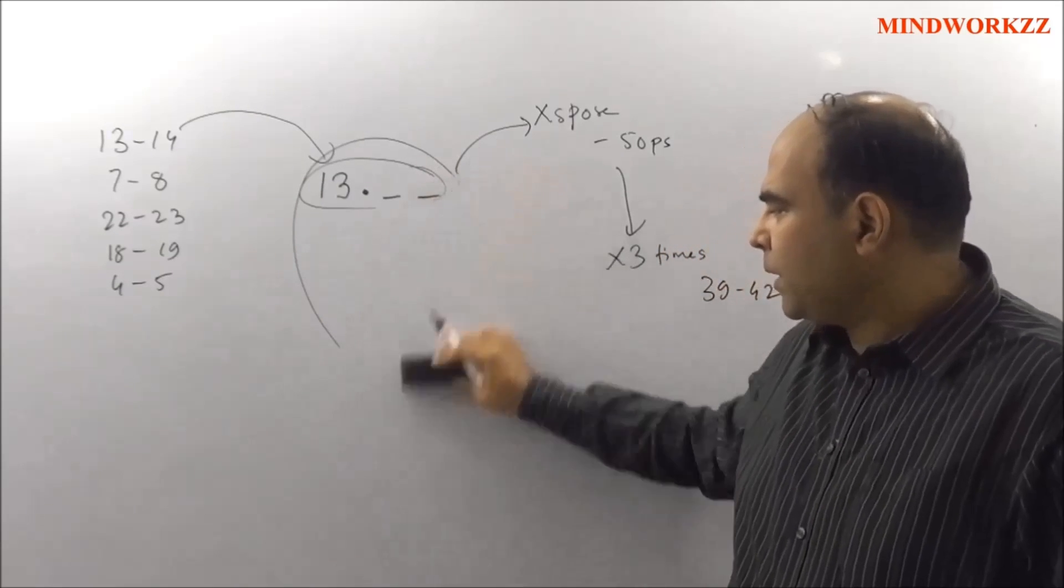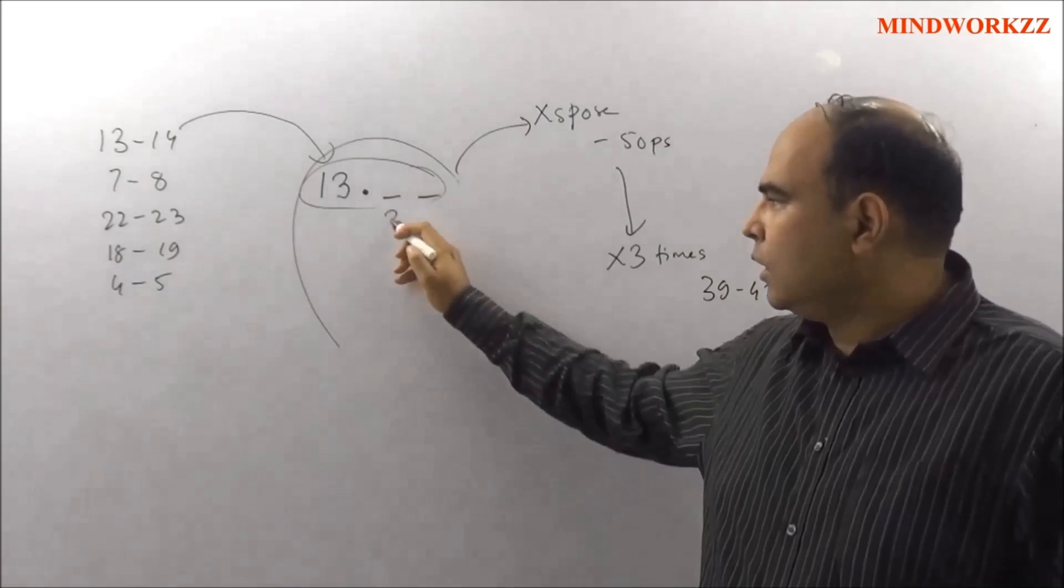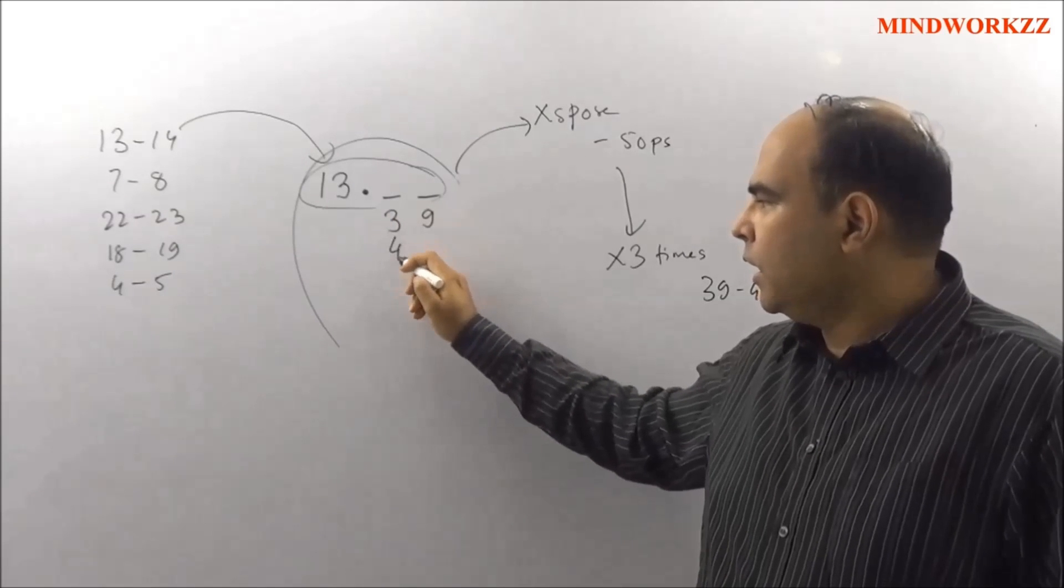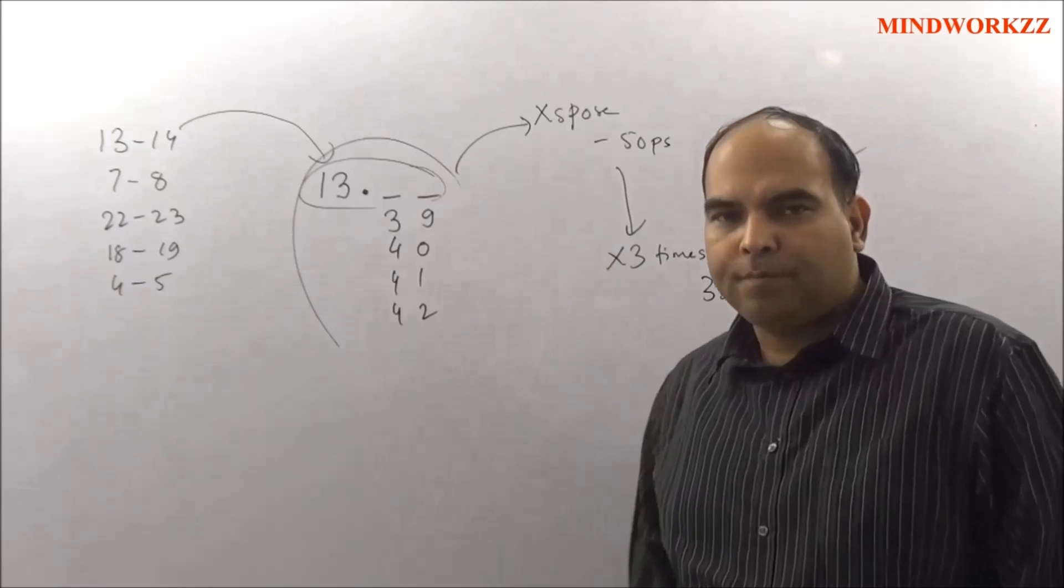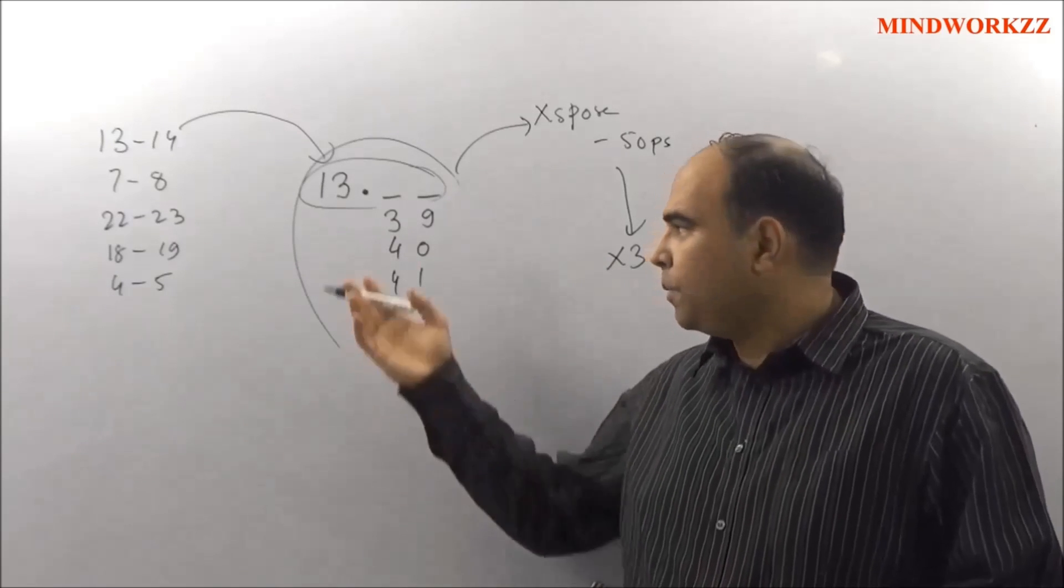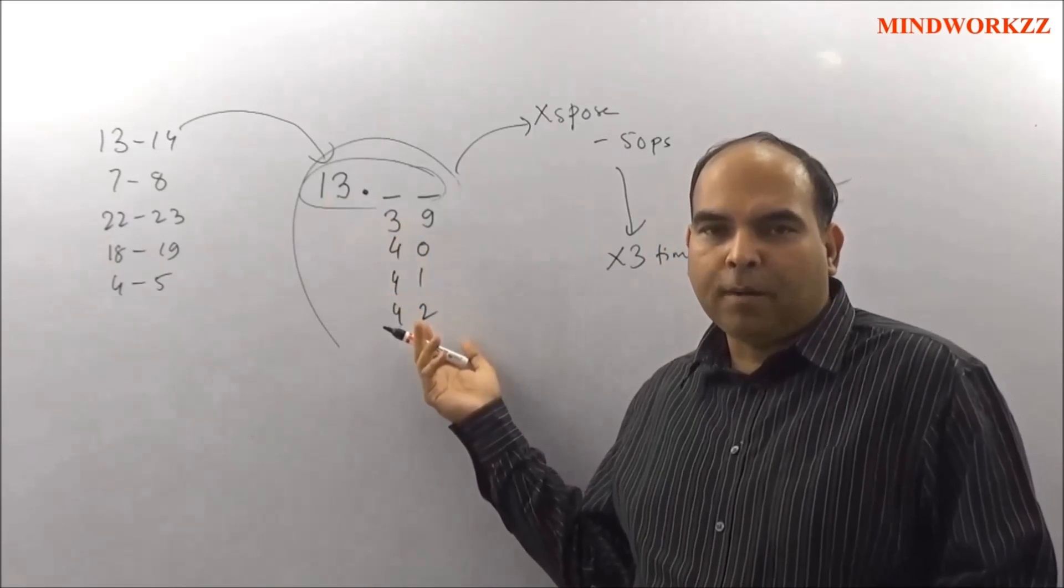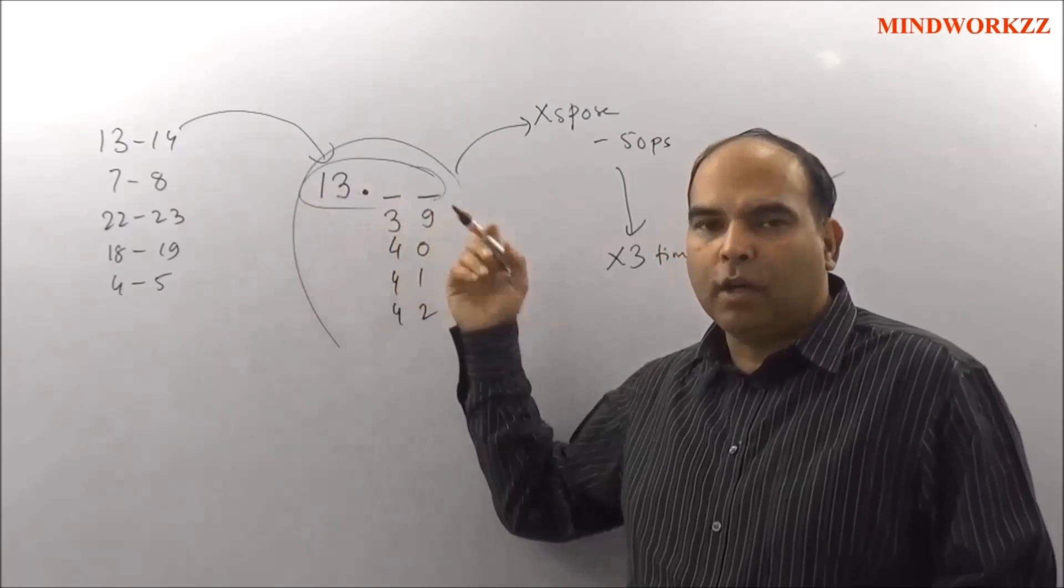So a little bit of introspection at this point will tell you that the only numbers to consider is 13.39, 13.40, maybe 13.41, and maybe 13.42. That's the range because 14 rupees will give you a 42 rupee tripling and 13 rupees will give you a 39 rupee tripling.